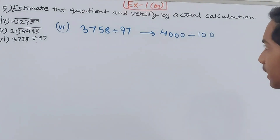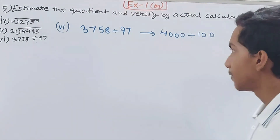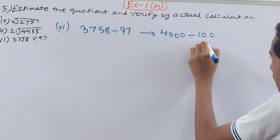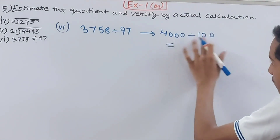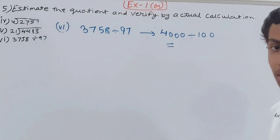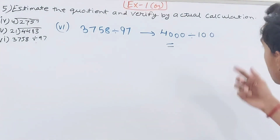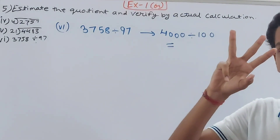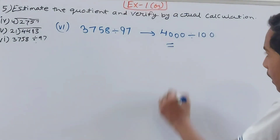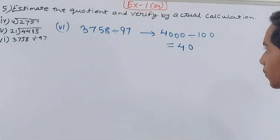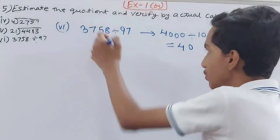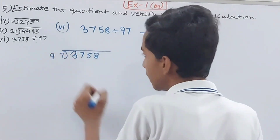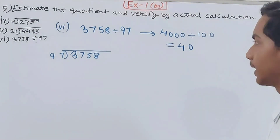For the estimated 4000 ÷ 100: there are three zeros in 4000 and two zeros in 100, so remove two zeros from three — one zero remains. Estimated quotient is 40. Now for the actual: 3758 ÷ 97.